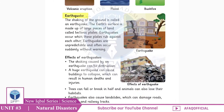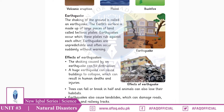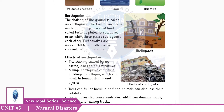Earthquake kaise hoti hai? Shaking of the ground is called an earthquake. It occurs when tectonic plates rub against each other without warning. The effects include buildings collapsing, human deaths, trees falling, landslides, and damage to roads, bridges, and railway tracks.